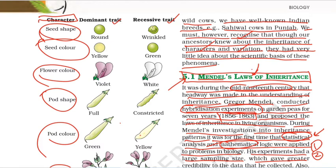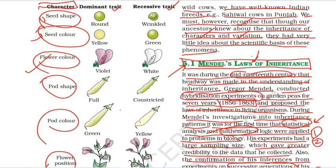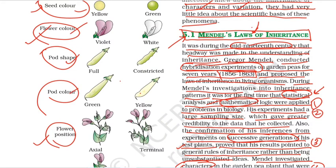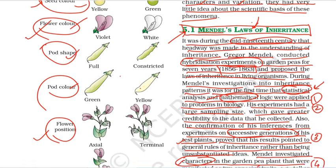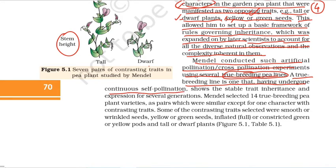Mendel conducted artificial pollination or cross-pollination experiments using several true-breeding pea lines. A true-breeding line is one that, having undergone continuous self-pollination, shows stable trait inheritance and expression for several generations.